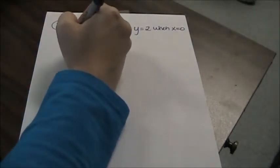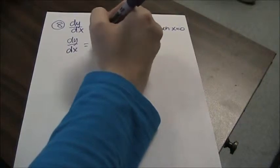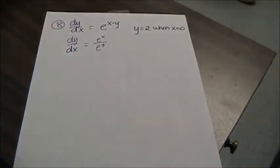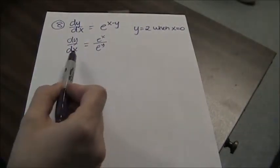So if I rewrite my differential equation, it would be e to the x divided by e to the y. And then from there, it's easy to get all your terms that involve y on one side and your terms that involve x on the other by multiplying both sides by e to the y and both sides by dx.